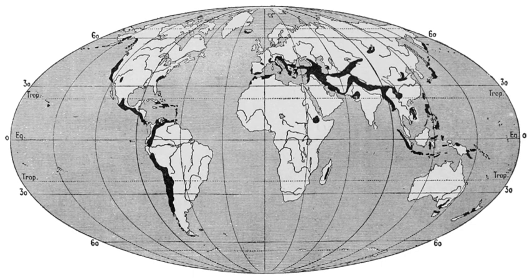The Earth was compared to a cooling ball of iron, or a steam boiler with shifting boiler plates. By the early 1900s, it was known that temperature increased with increasing depth. The thickness of the crust — the boiler plates — was estimated at 10 to 50 miles, and the downward pressure would be hundreds of thousands of pounds per square inch.